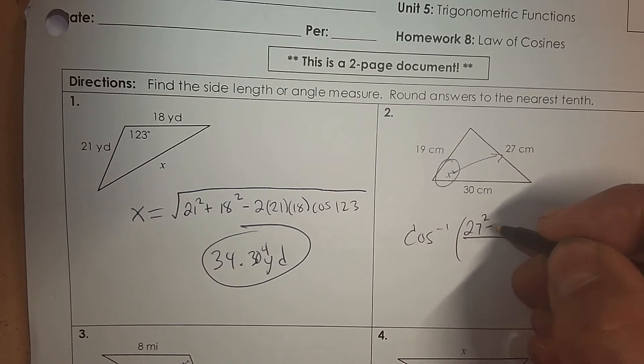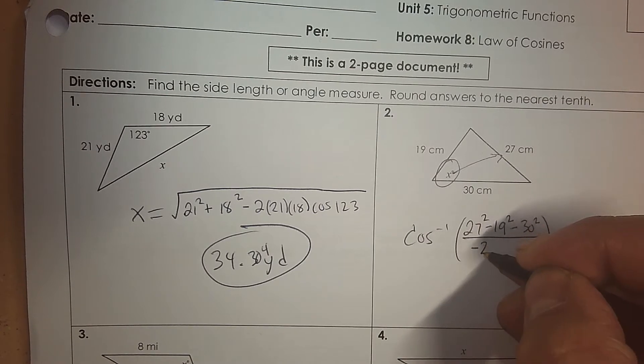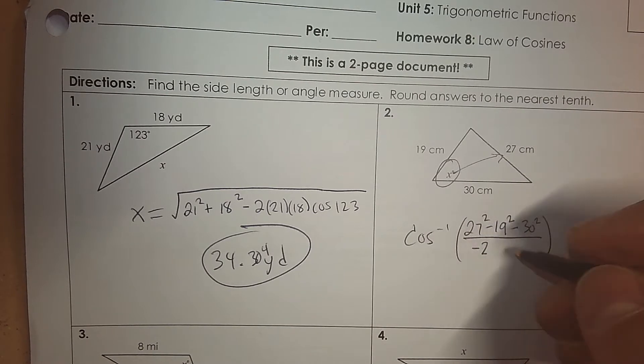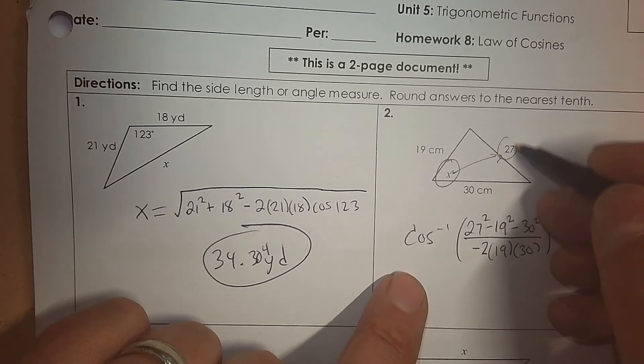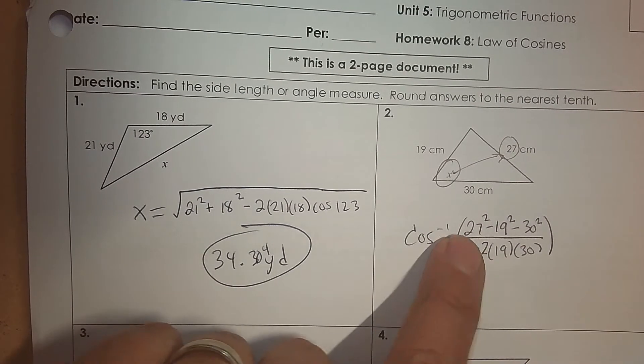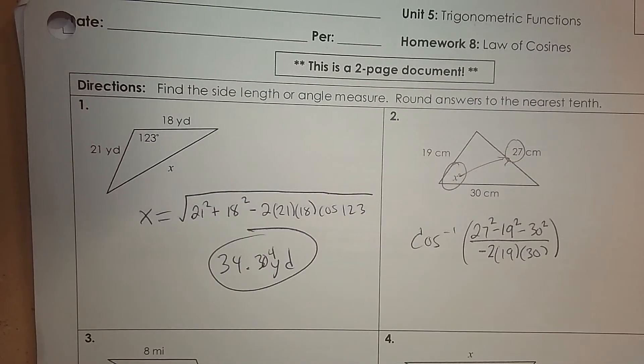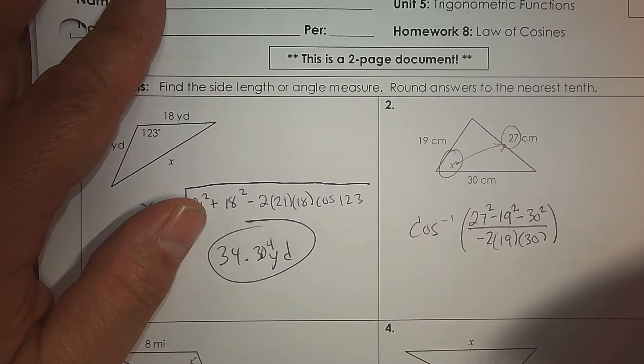Now the order doesn't matter. So subtract 19 squared, subtract 30 squared. And then negative 2 is part of the formula. And then it's 19 times 30. So the 27, you only use once in the formula. And the 19 and 30 show up twice. And then that's it.